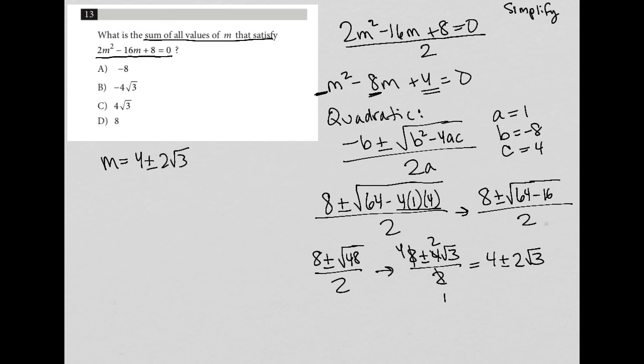If m is equal to 4 plus or minus 2 root 3, that means that it's going to be 4 plus 2 root 3 as an answer. And I'm going to have 4 minus 2 root 3 as an answer.